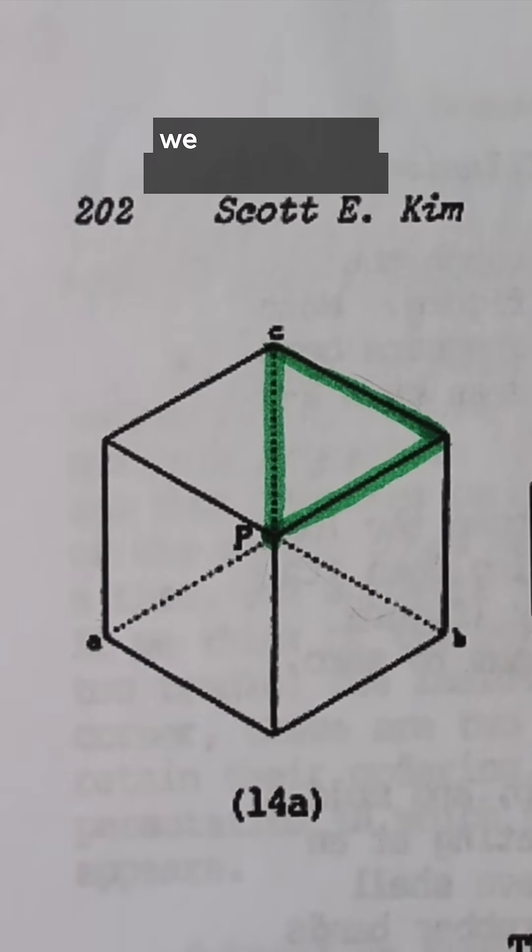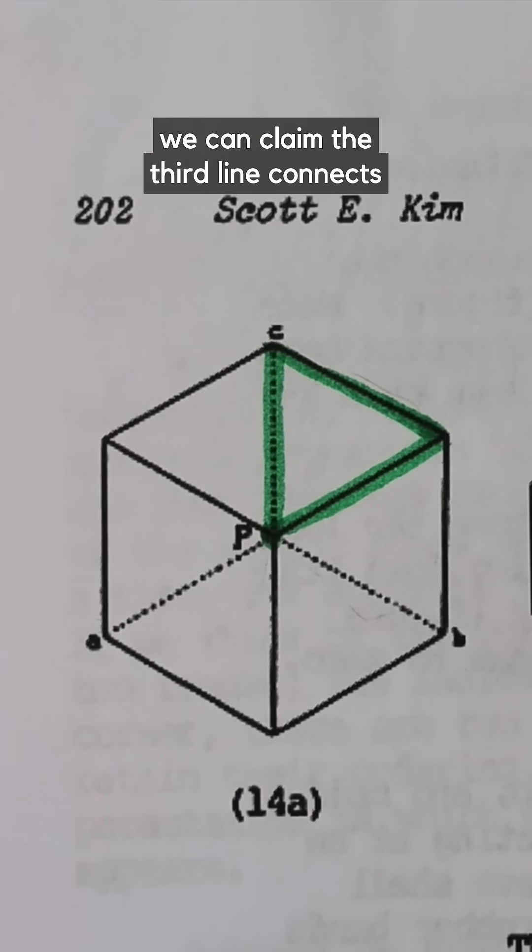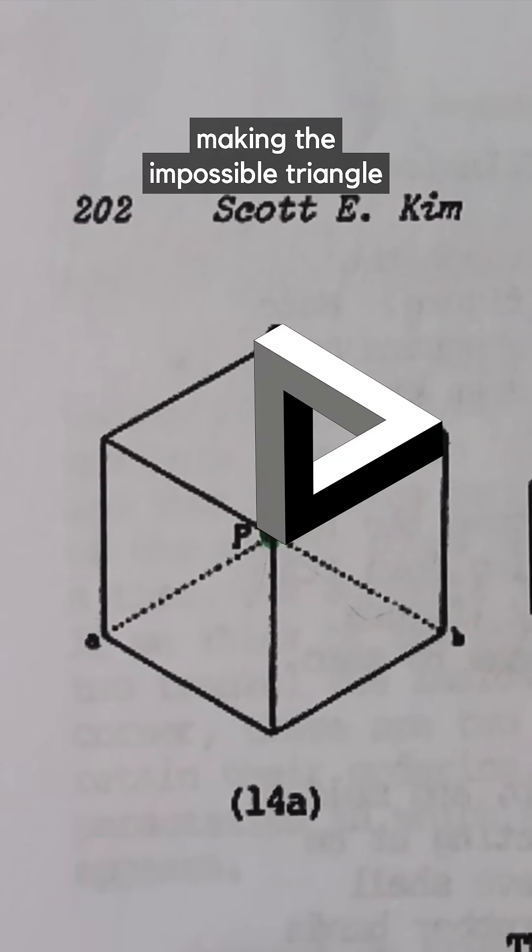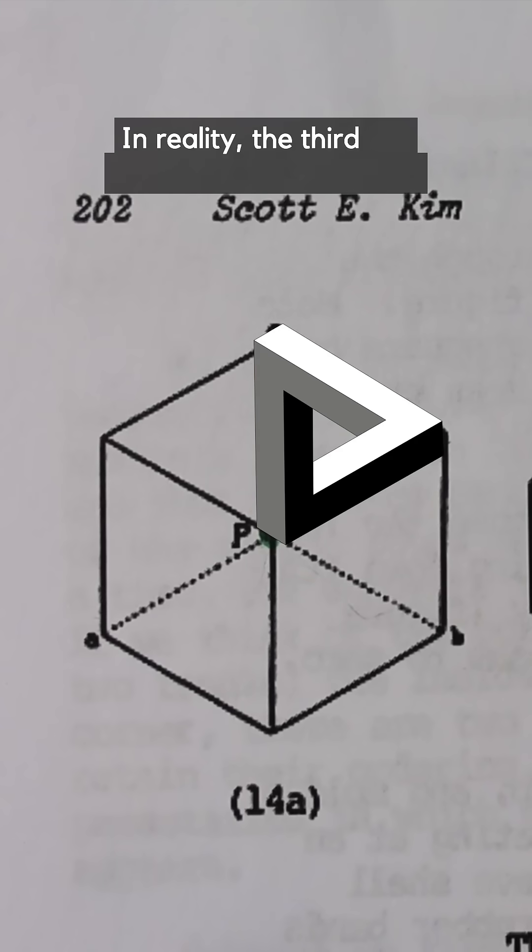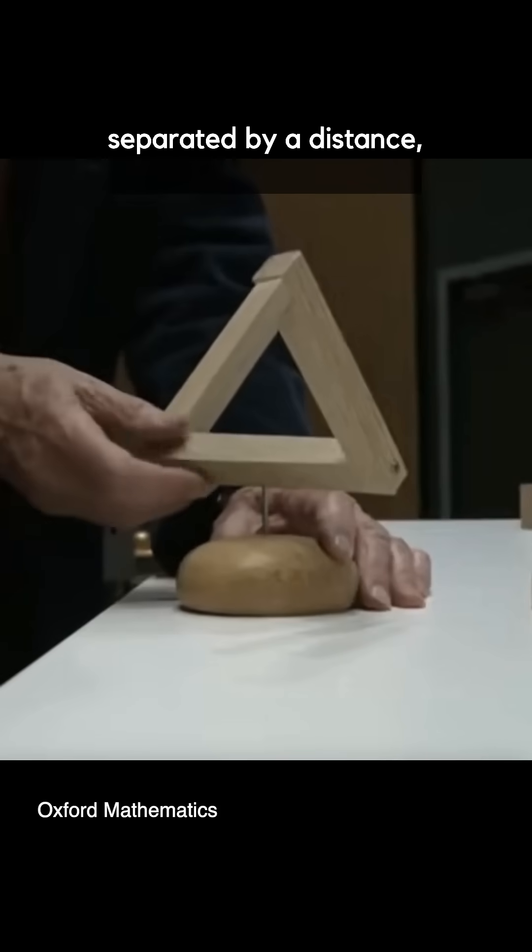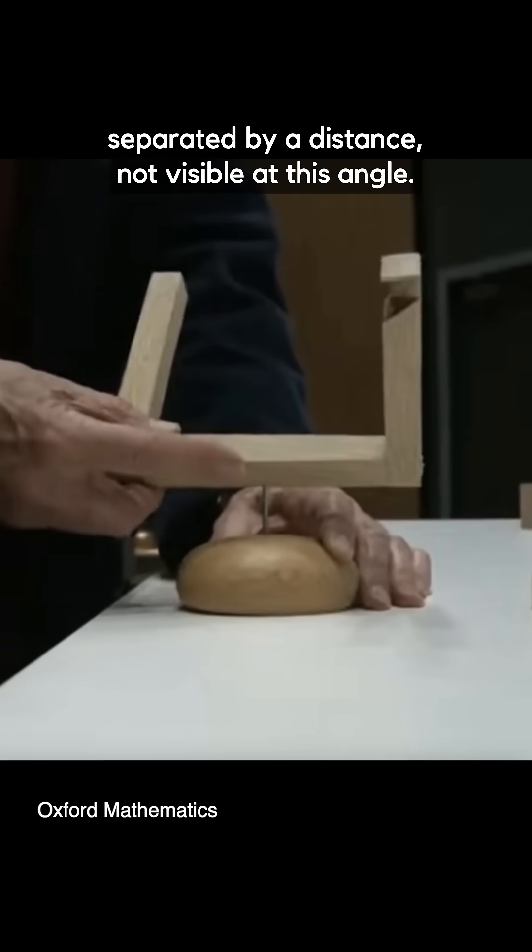When drawn like this we can claim the third line connects at the front corner making the impossible triangle. In reality the third line lands at the back corner separated by a distance not visible at this angle.